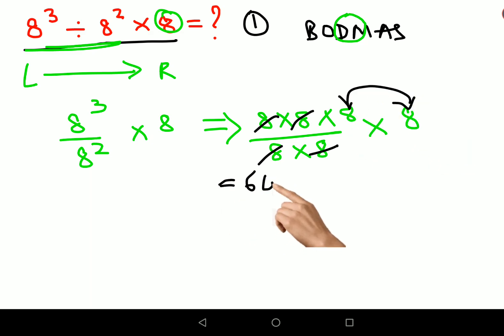Now for those who are still confused, see if the question was 8² × 8 ÷ 8³, then definitely your answer would have been 1. Why? Because first we'll do the multiplication.